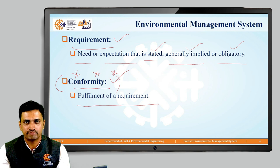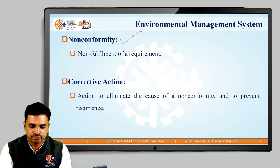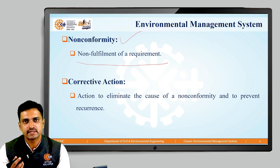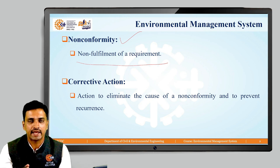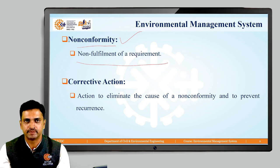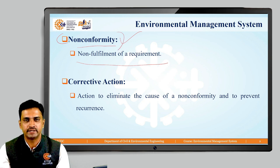The reverse situation of conformity is called non-conformity. When there is a non-fulfillment of a requirement — whether the requirement is obligatory, mandatory, or voluntarily taken by the organization — and the organization fails to meet that requirement, then we call non-conformity is reached. In order to have very good performance of environmental management system, it needs to be ensured that the number of non-conformities is as low as possible.